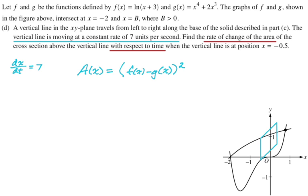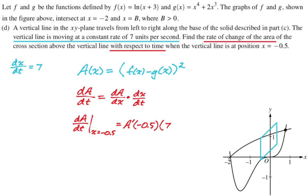Okay. We're looking for dA/dt. And we know by the chain rule that dA/dt should be dA/dx times dx/dt. So if I can find dA/dx when x is negative 0.5 and multiply it by dx/dt, which we know is 7, that's going to be my answer. So that's what I'm going to try to do. So dA/dt is going to end up being, at x equals negative 0.5, A prime of negative 0.5 times 7.